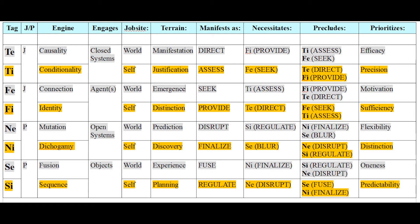An ESTJ will understand their own feelings about as well as I keep my house tidy — which is intermittently. They'll have a burst of feeling-understanding where they suddenly clean everything up, understand their feelings really well for like a day, and then it's back to not understanding them at all. That would be the equivalent there.